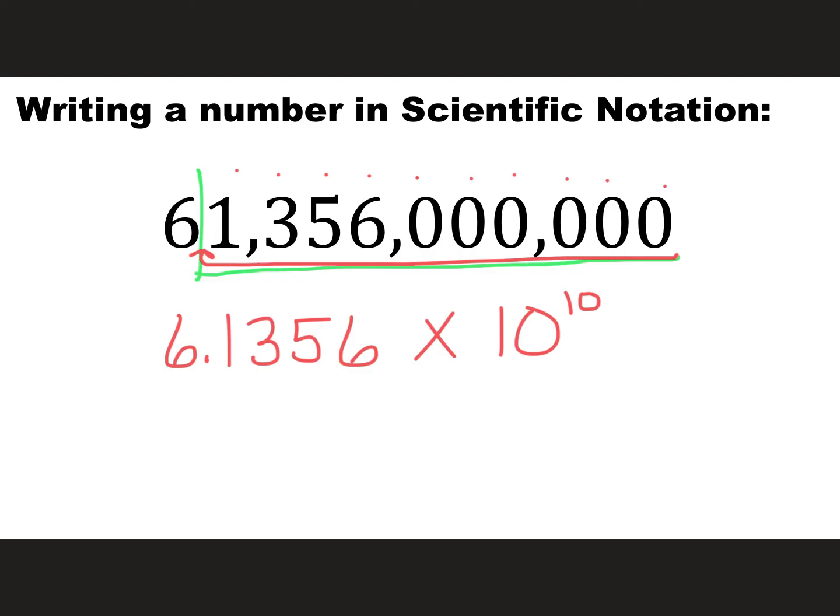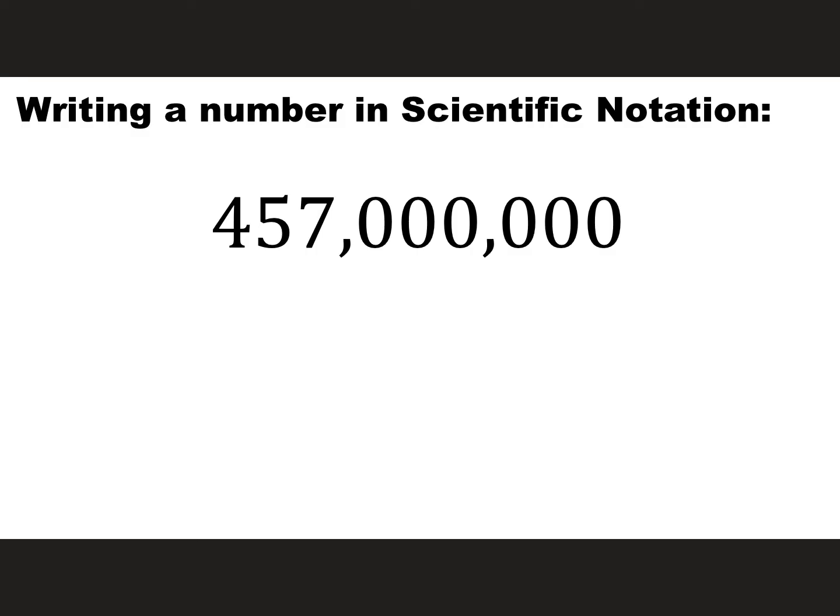One of the most common mistakes people make is that they do the 10 to the power of how many zeros they see at the end. But that's not going to get your decimal to go all the way back to where it should have been. You try this one. Slash, underline. 4.57 times 1, 2, 3, 4, 5, 6, 7, 8, 10 to the power of 8.